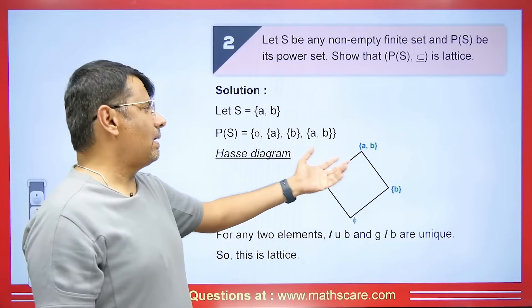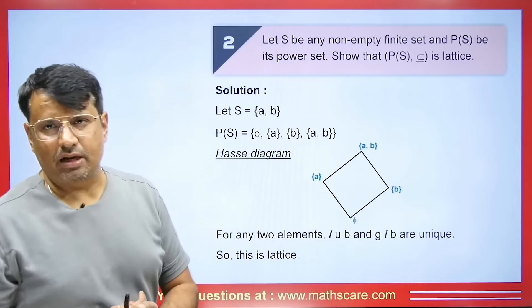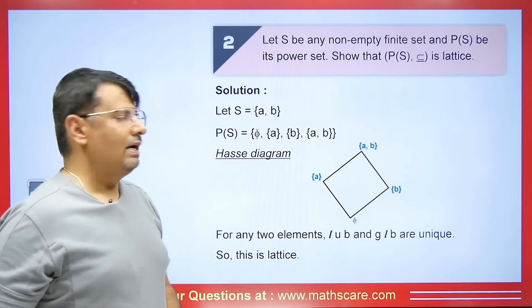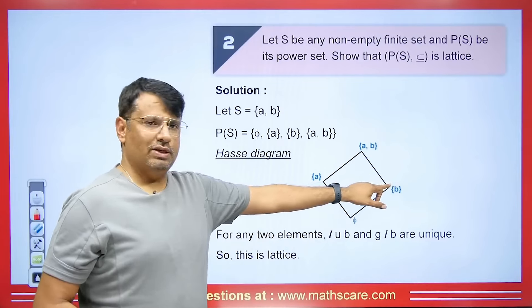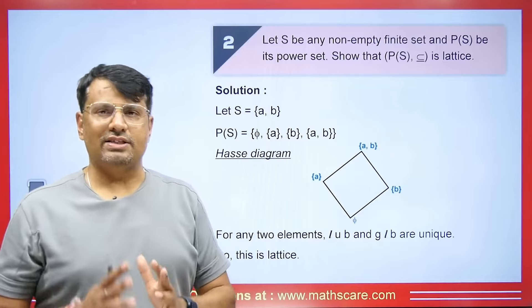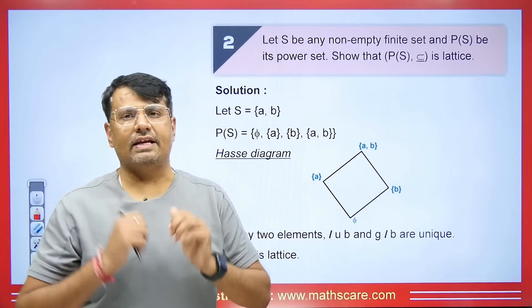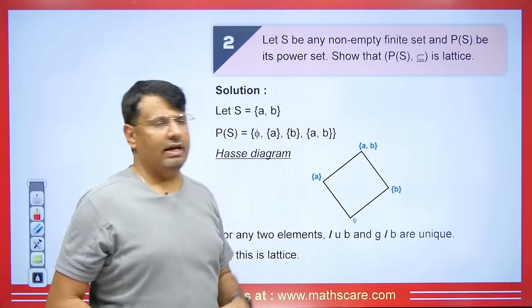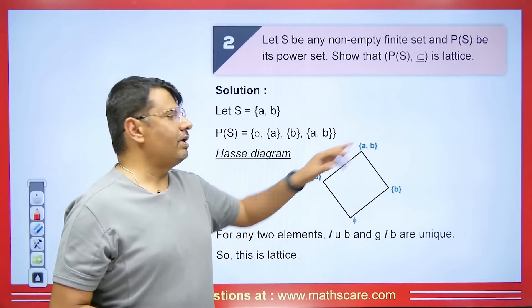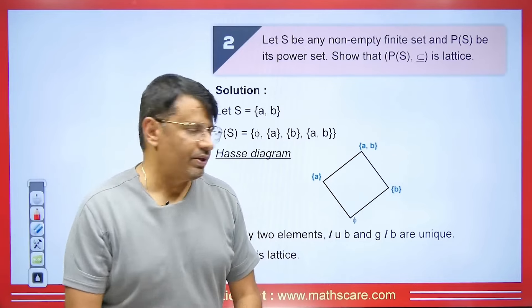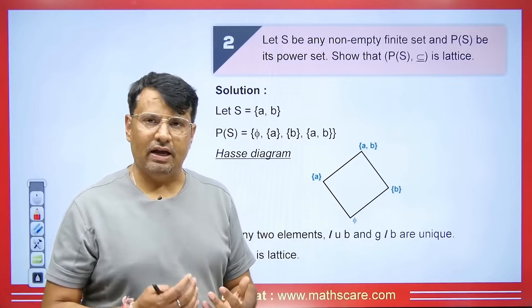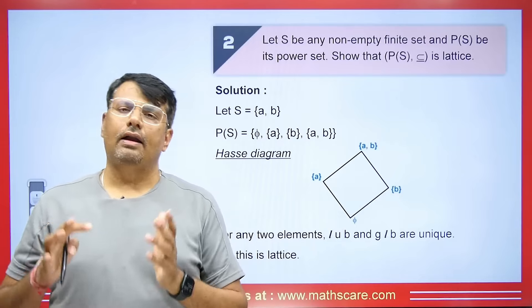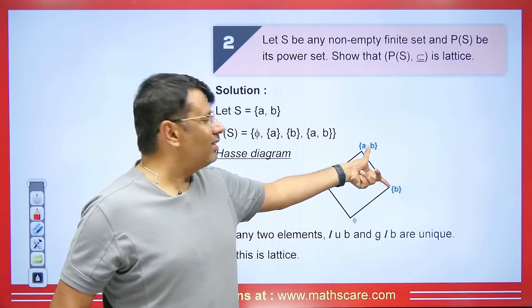Let's understand another example. Let S be a non-empty finite set and P(S) be its power set. For two elements, the power set is φ, {a}, {b}, and {a,b}. In the diagram, φ is a subset of a as well as b, and a is a subset of {a,b}. We check: for elements a and b, we have only one element above — {a,b} — which is the upper bound and also the least upper bound. φ is the single greatest lower bound. Since both are unique, this is a lattice.